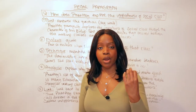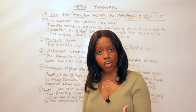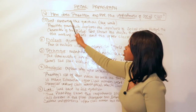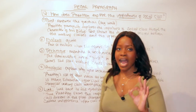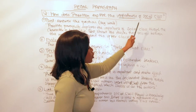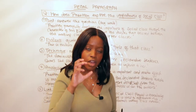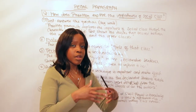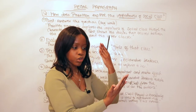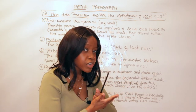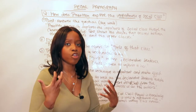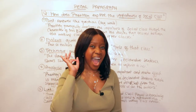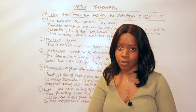I'm going to work you through how to craft a really strong PETAL paragraph using 'An Inspector Calls'. The sample question is: 'How does Priestley explore the importance of social class?' Notice that I've underlined keywords within this question — they are the most important things you need to address. Always look at any exam-style question and identify what it really wants you to focus on, then underline and highlight that. In this question, the keywords are 'importance' and 'social class'.